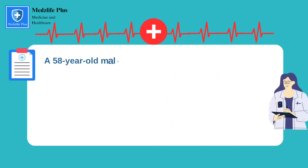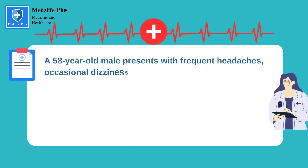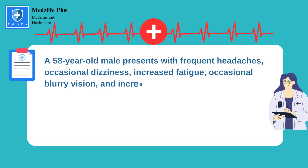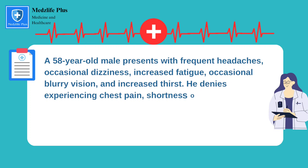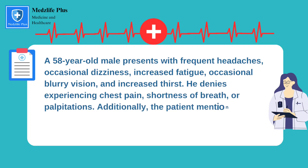A 58-year-old male presents with frequent headaches, occasional dizziness, increased fatigue, occasional blurry vision, and increased thirst. He denies experiencing chest pain, shortness of breath, or palpitations.